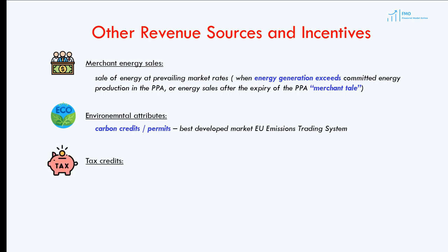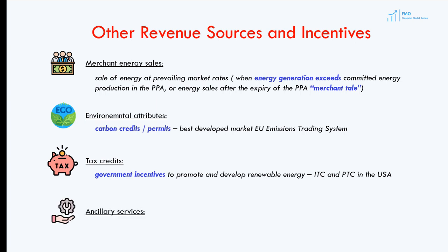Governments around the world have created subsidies and incentives for renewable projects. A prominent example is investment tax credits and production tax credits in the USA, which have contributed significantly to renewable power development in the US power sector. Finally, power projects may provide ancillary services, such as flexible generation to meet power outages or adjusting energy output to reflect short-term variations in supply and demand. The market has developed mechanisms to procure and price these ancillary services in Europe and the US; however, renewable energy projects are generally not well-suited to provide these services.